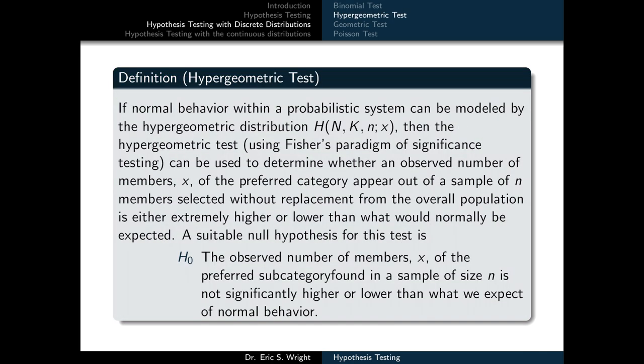Our next test is the hypergeometric test. If normal behavior within a probabilistic system can be modeled by the hypergeometric distribution h(N, K, n, x), then the hypergeometric test can be used to determine whether an observed number of members x of the preferred category, appearing out of a sample of n members selected without replacement from the overall population, is either extremely higher or lower than what would normally be expected. A suitable null hypothesis is H sub 0: the observed number of members x of the preferred subcategory found in a sample of size n is not significantly higher or lower than normal behavior.